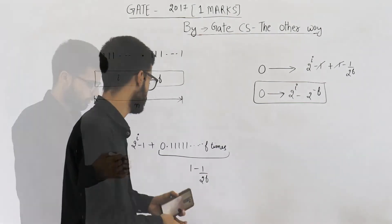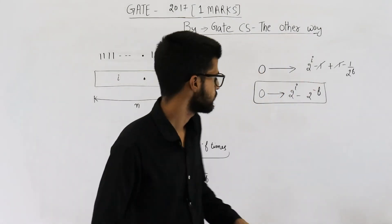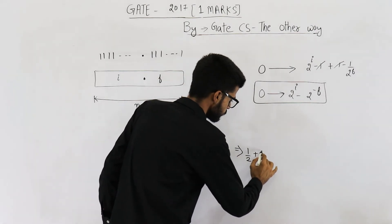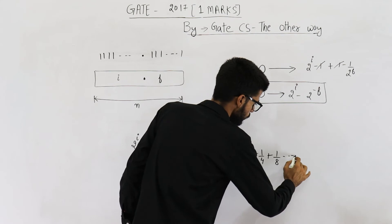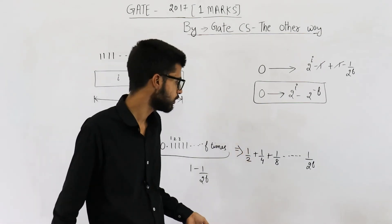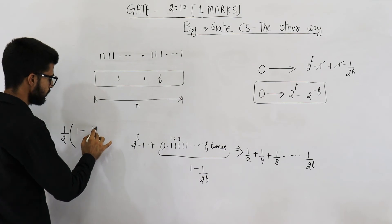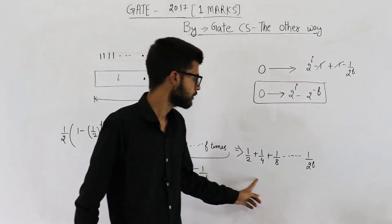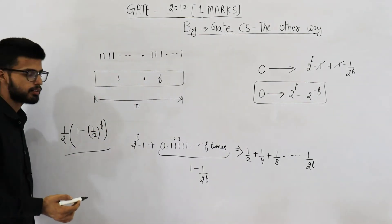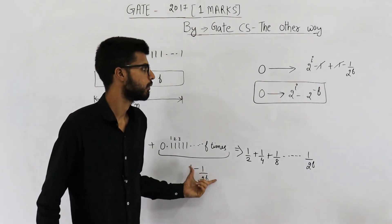If you're confused about how to get that fractional value, write out the weights and follow the normal procedure. The weights are 1/2, 1/4, 1/8, and so on, up to 1/2^f. This is a geometric progression with first term 1/2 and common ratio 1/2, with f terms total. Applying the GP formula A(1 − R^n)/(1 − R), it simplifies to 1 minus 1/2^f — the same value. So the answer is confirmed: the range is 0 to 2^i minus 2^(−f).